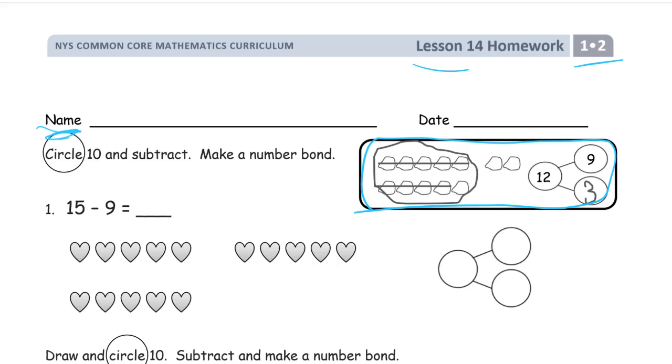So, we've got our 10 group here, circle 10, and subtract. We're crossing out 9. That means there's going to be one left, right? Because there's always one left. We can take 9 from 10. And then we have 5, and one more is 6. And our number bond is a whole of 15, with parts of 9 crossed out and 6 left.